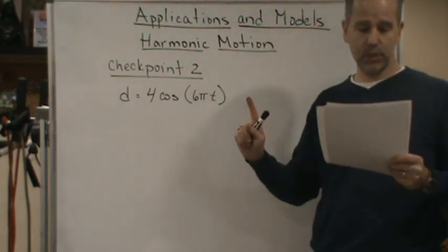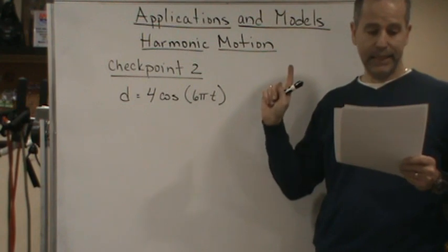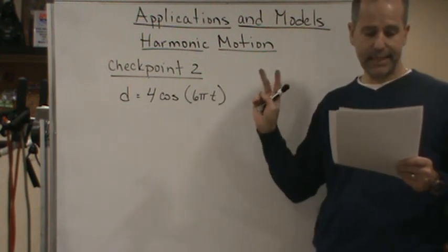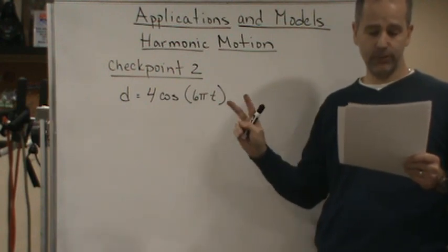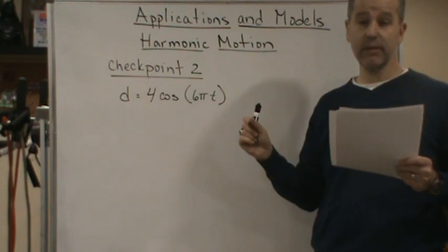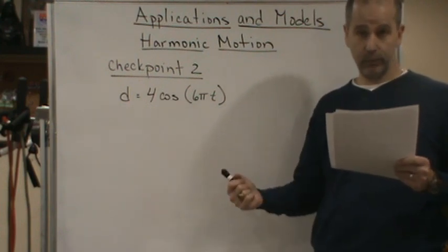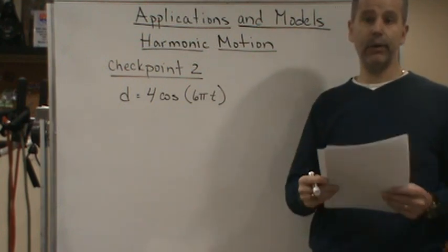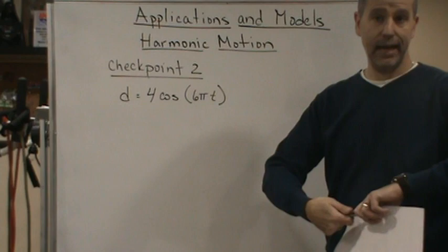Find the maximum displacement for A, B is find the frequency, C is find the value of D when T equals 4, and then D, find the least positive value of T for which D is equal to 0. So go ahead and write that down and then work it out and then come back and see if you've got the same answers that I got.